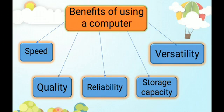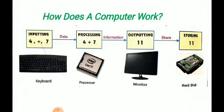Data goes for the processing then it becomes the information and comes to the output device and then it goes to the storage device for the future use. Keyboard is our input device, processor is our CPU, and monitor is our output device, and then data stores in the hard disk. That is how a computer works.